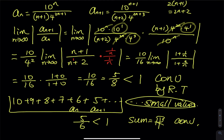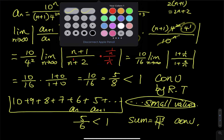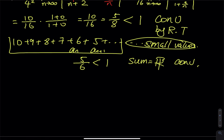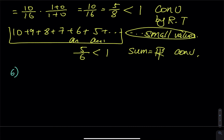That's the concept of the ratio test. Moving on to number six. For number six we have the sum from n=1 to infinity of n times pi raised to the n, divided by negative 3 raised to n minus 1. We copy the series for the current term a_n.